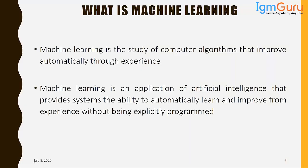Machine learning is an application of AI — artificial intelligence — that provides systems the ability to automatically learn and improve from experience without being explicitly programmed. When we say 'improve from experience,' this experience is different from human experience; it is mostly in the form of historical data.